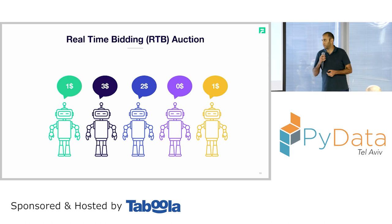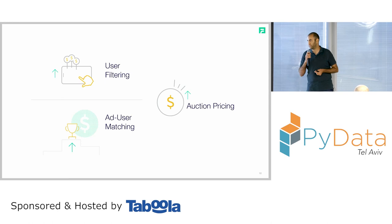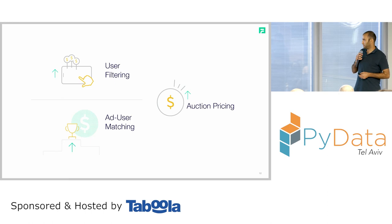Now we'll describe some main challenges that a bidder and advertiser faces, and briefly go through each of them. We have user filtering, ad-user matching, and auction pricing, which is the main context for today's session.